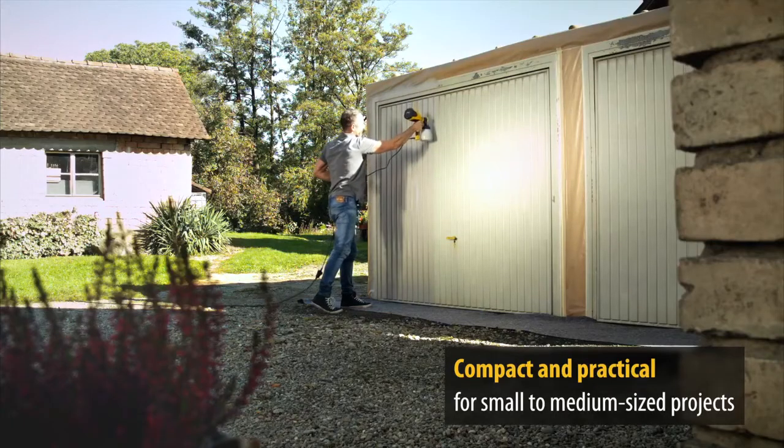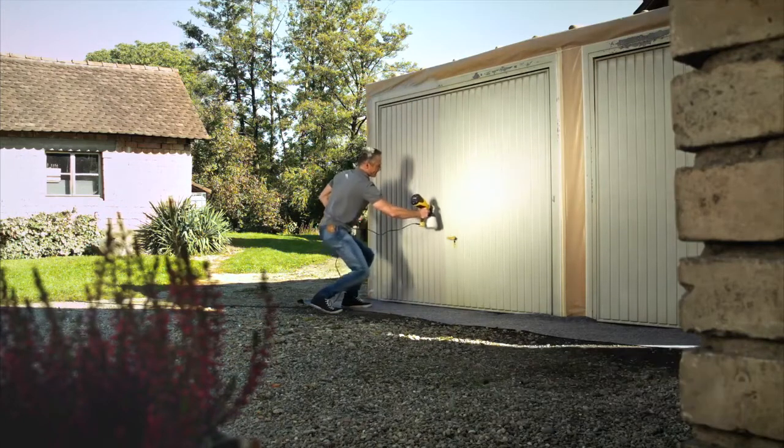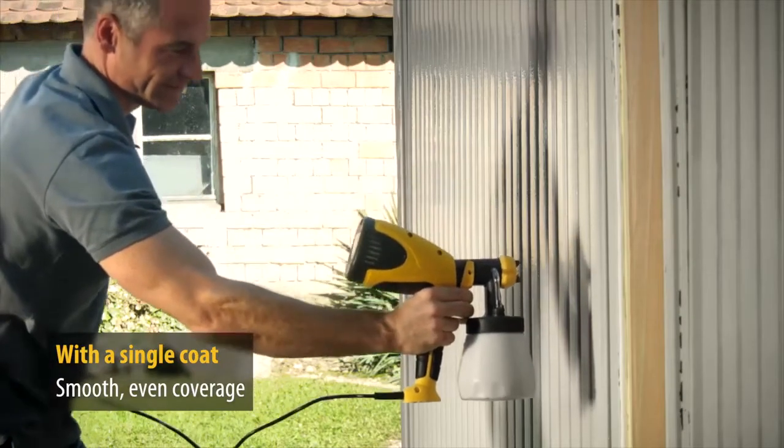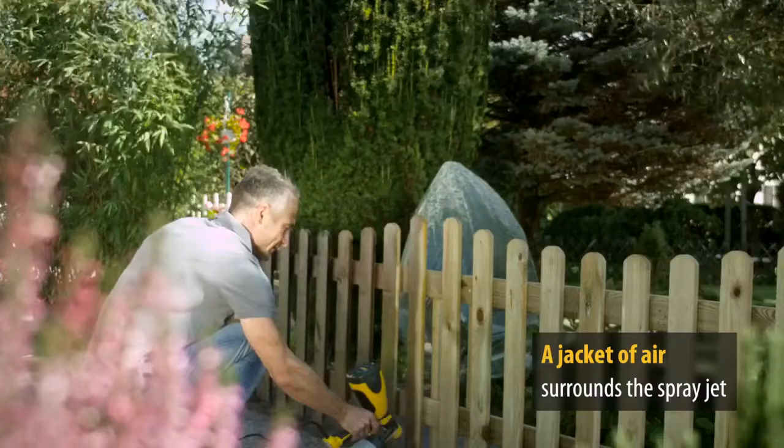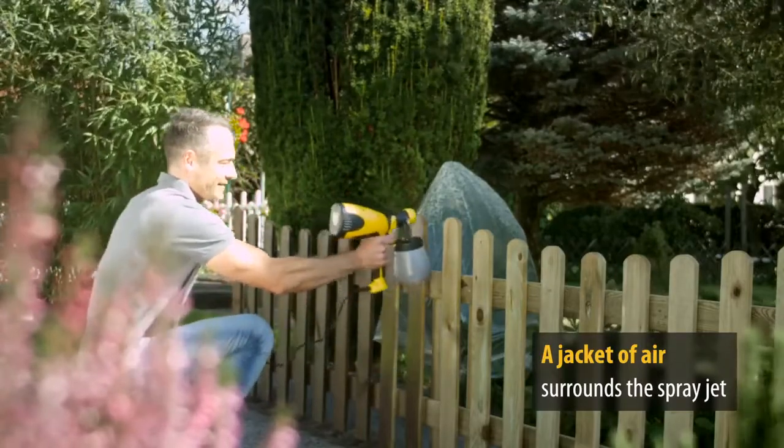The compact practical W100 is the ideal tool for small and medium sized projects. A smooth even finish? That's now possible quickly in just a single coat. The spray jet is surrounded by a jacket of air to reduce the need to mask surfaces.